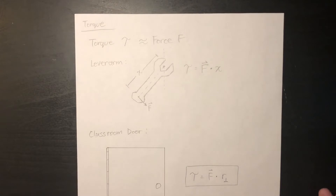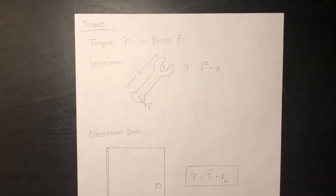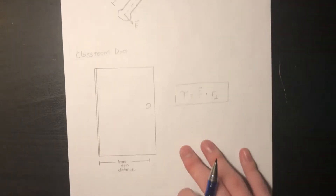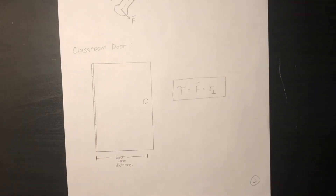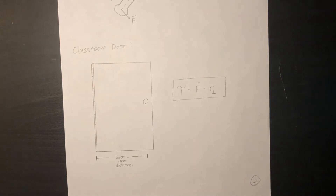We can make the analogy of the equation torque equals force times distance to our classroom door example. When we push or pull the door, we apply a perpendicular force to its surface. If we push or pull further away from the axis, we apply a greater torque, so we push the door more easily. This is also why the door handle is not in the middle of the door but rather on the side — because you apply a higher torque.